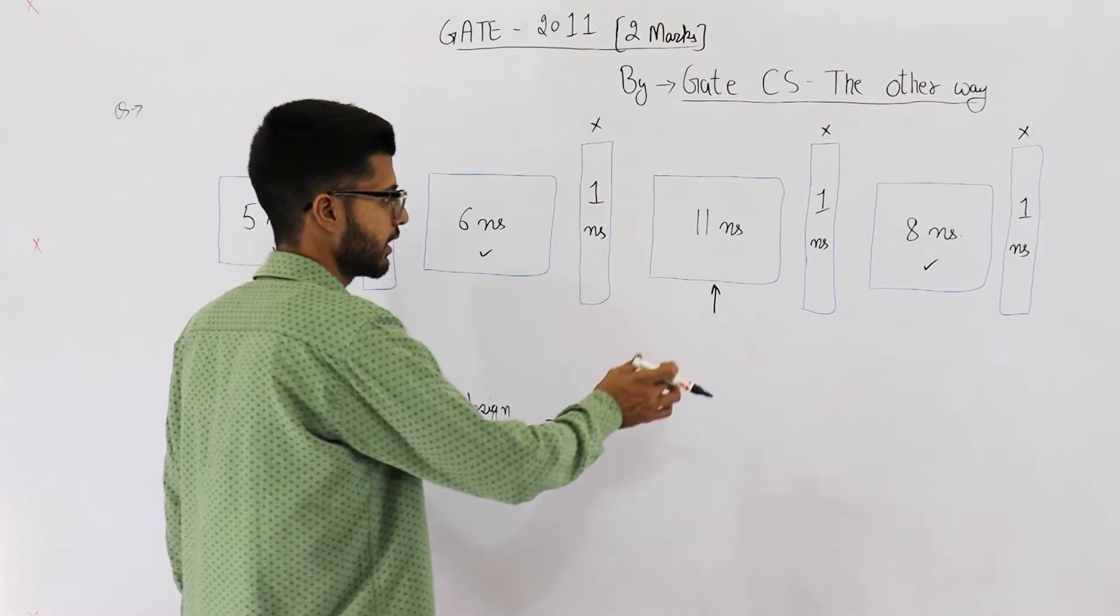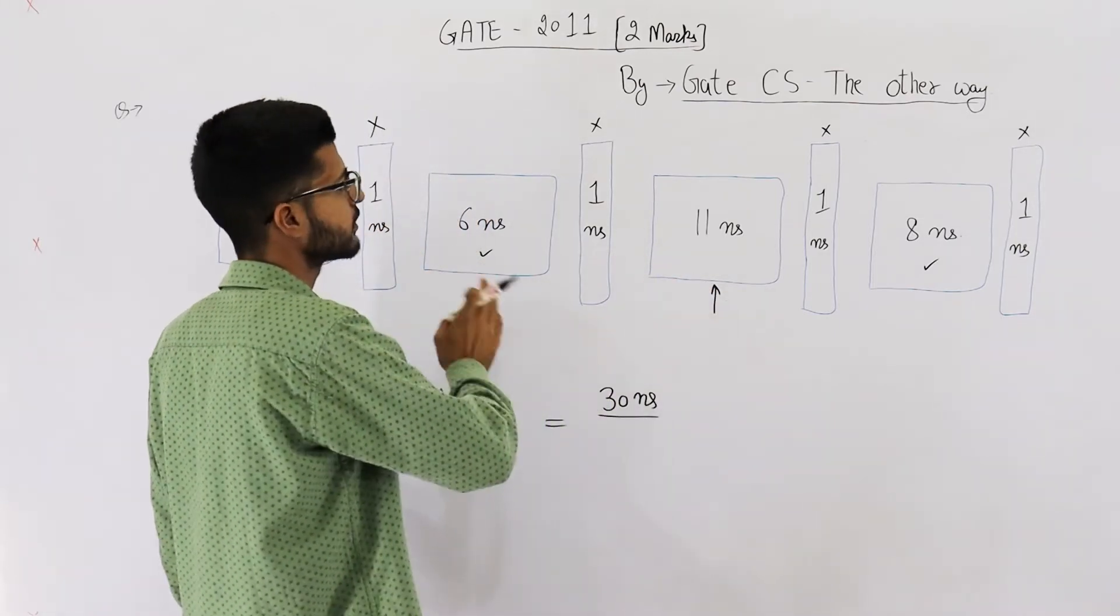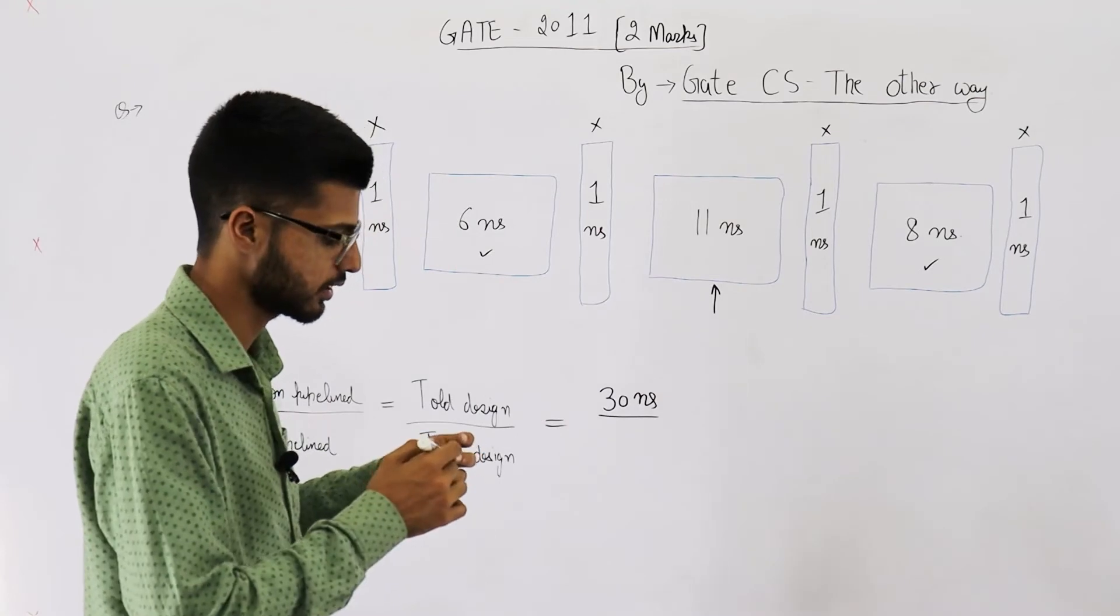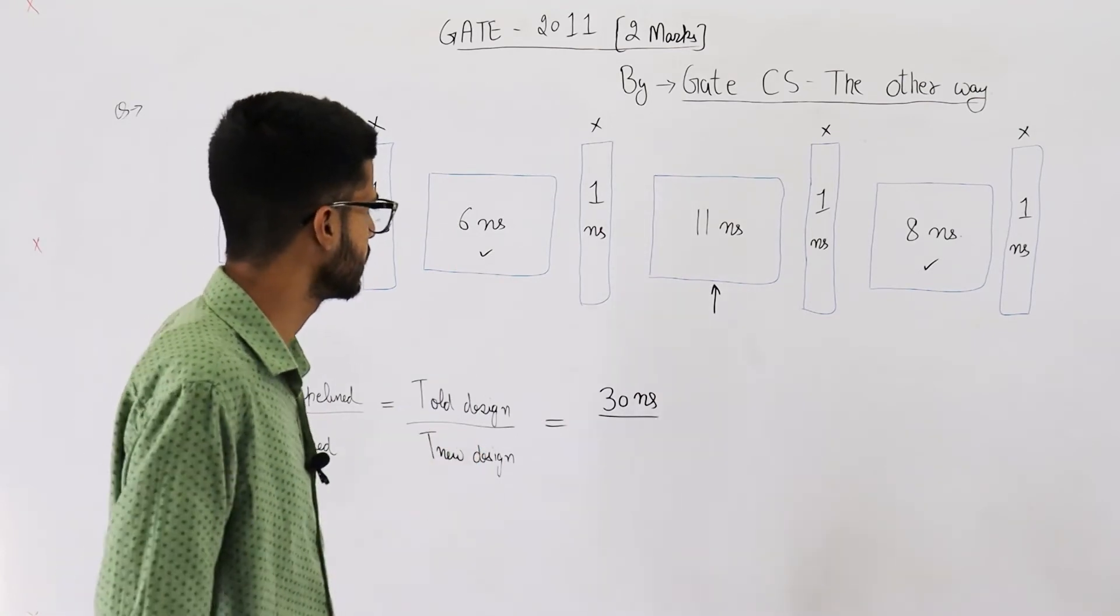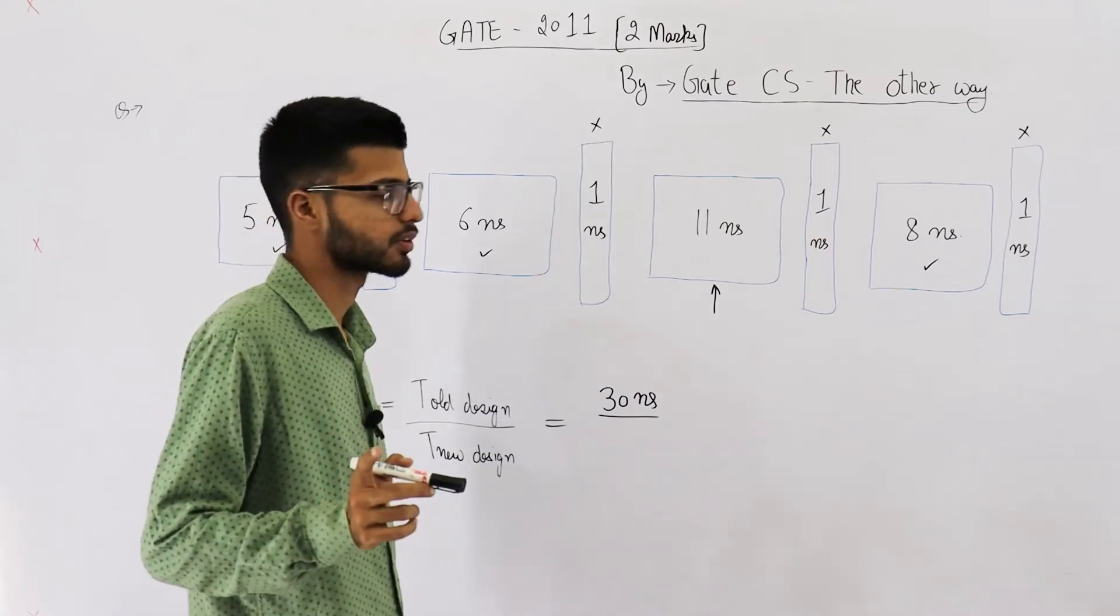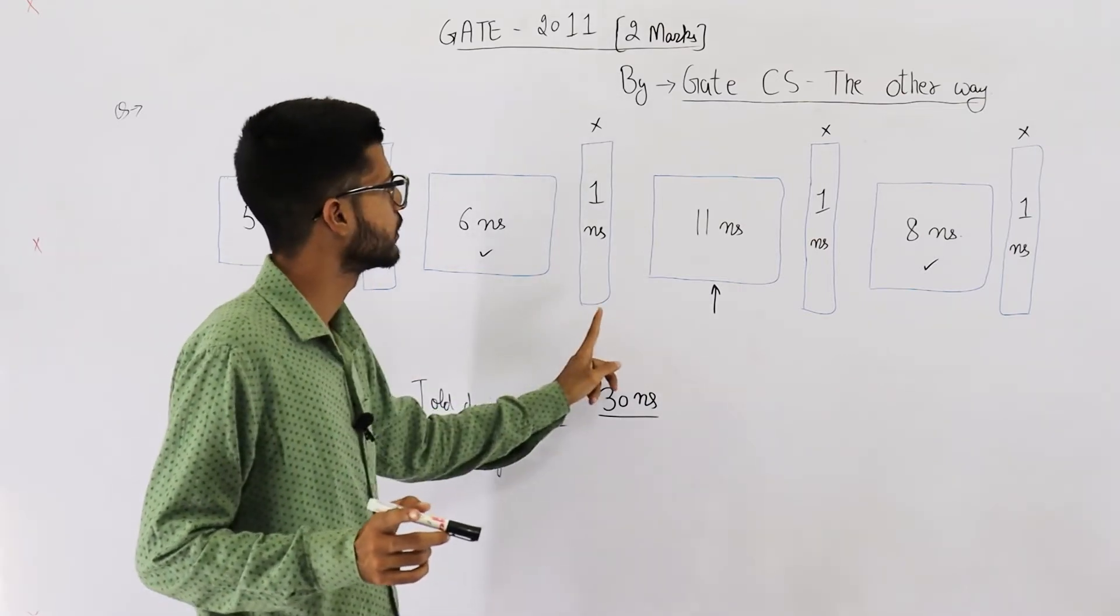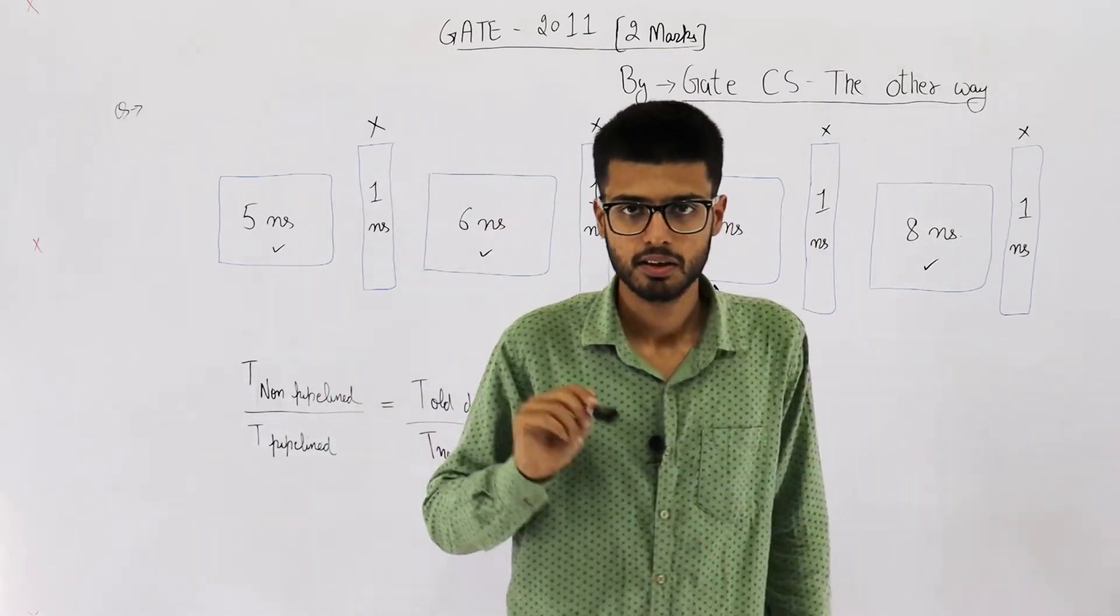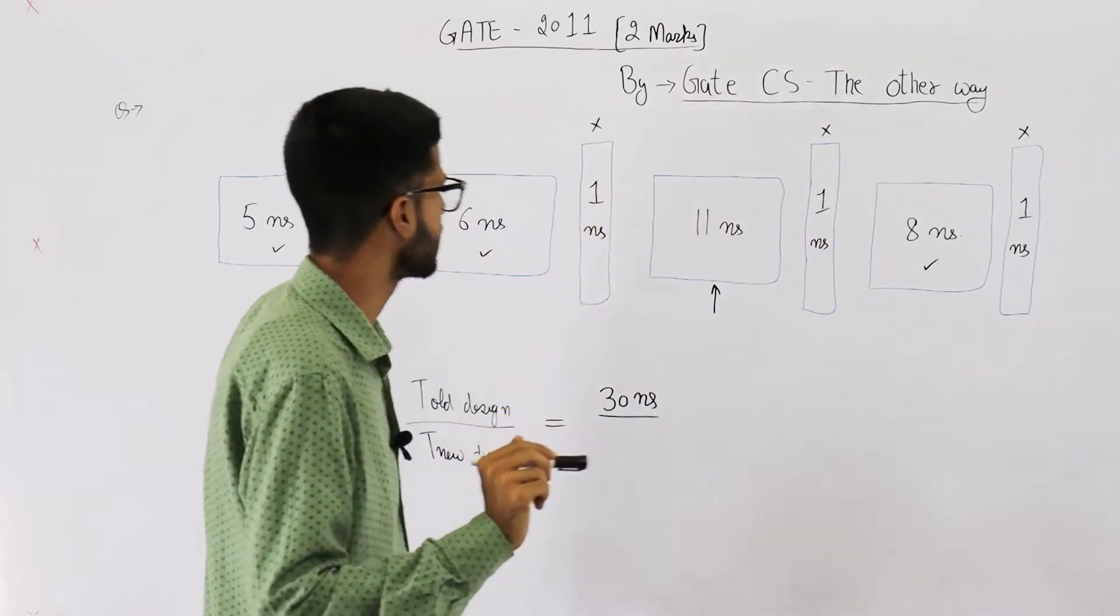Now, after 11 nanoseconds, each and every stage would have placed their data in buffers because in 11 nanoseconds, every stage has completed processing. That means after 11 nanoseconds, one nanosecond is required for the buffers to transfer their data. That is the buffer delay.